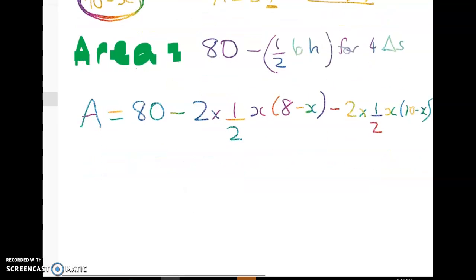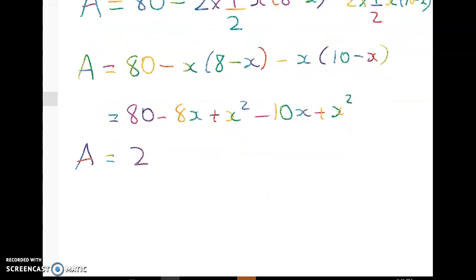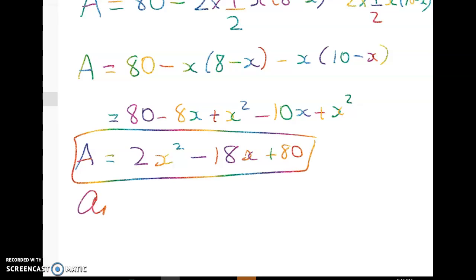So you can see that my expression for the area of a parallelogram is getting easier by the second. So we've got 80 minus x times 8 minus x minus x times 10 minus x. So it's 80 minus 8x plus x squared minus 10x plus x squared. Right so cleaning all of that up we can rewrite that as a quadratic and the area is equal to 2x squared minus 18x plus 80. So that's my expression for the area of the parallelogram.